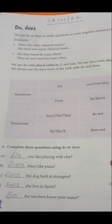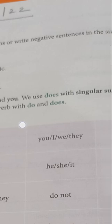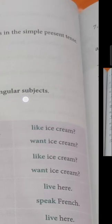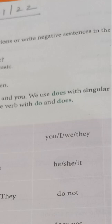We are going to discuss today do and does. We use do or does to make questions or write negative sentences in the simple present tense. In negative sentences, we use words like not or never.